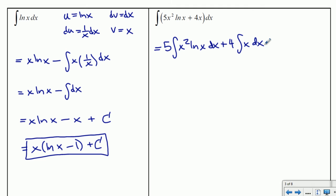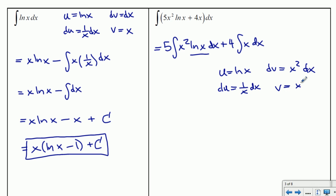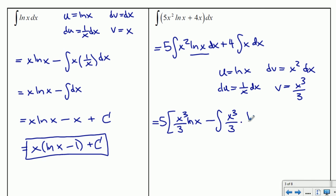We split into the integral of 5x squared ln x dx plus the integral of 4x dx. The second part is straightforward, so we only need integration by parts for the first. We pick u equal ln x and dv equal x squared dx — it may not be perfect but let's try. Then du equals 1 over x dx and v equals x cubed over 3.